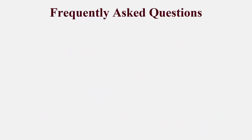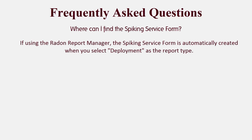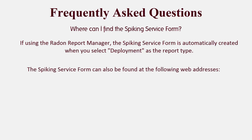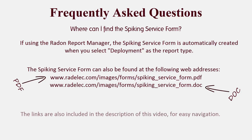Another question we commonly hear: where can I find the spiking service form? If you're using a current version of the Radon Report Manager, the spiking service form is automatically created whenever you select deployment as the report type on a spiking test record. If you're not using the Radon Report Manager, the spiking service form can be found on Radelec's website as both a PDF and a Microsoft Word document. We've also included links to both formats in the description of this video.